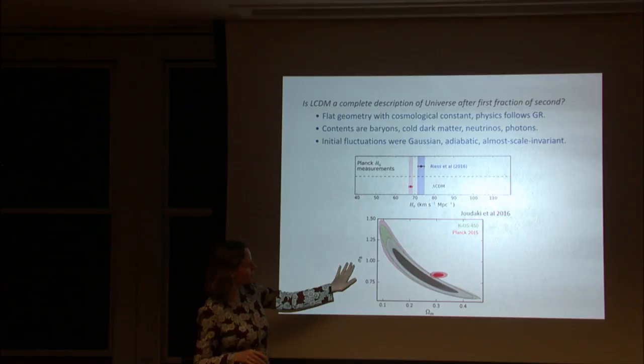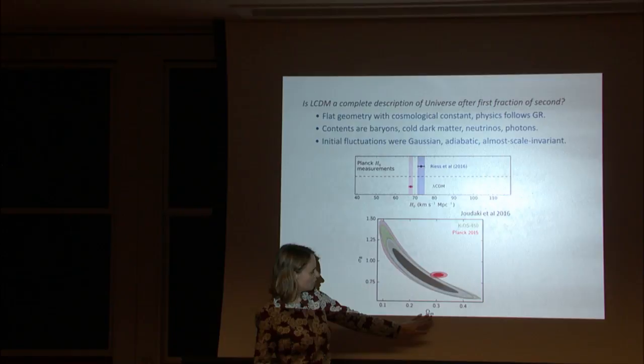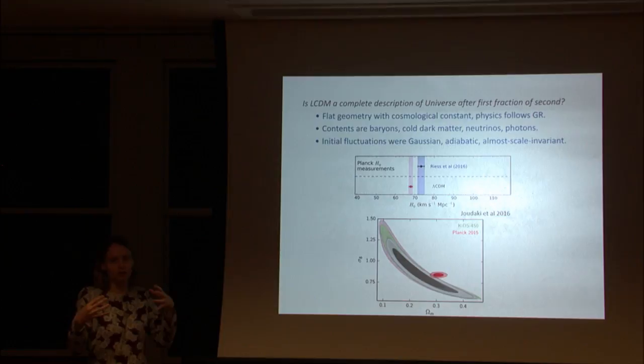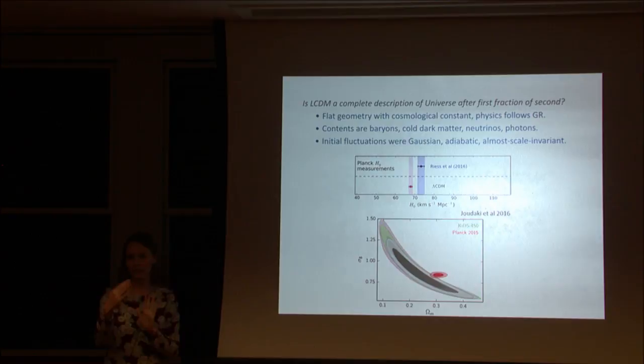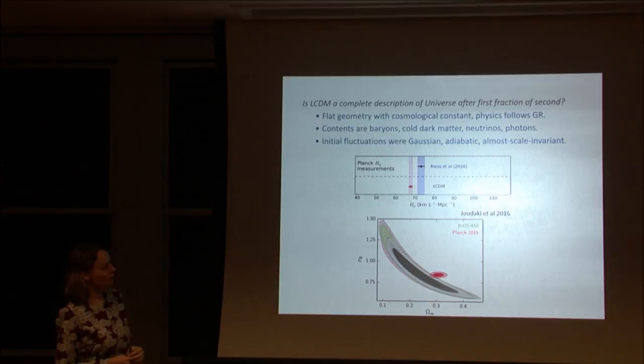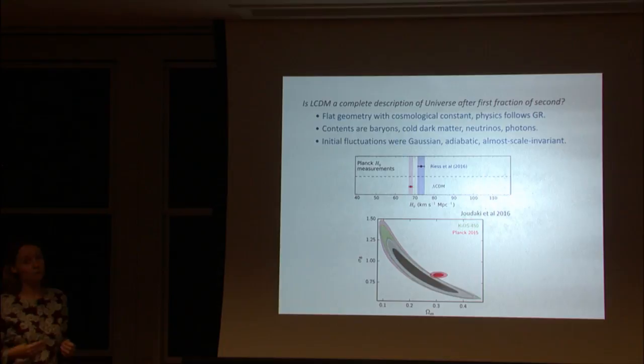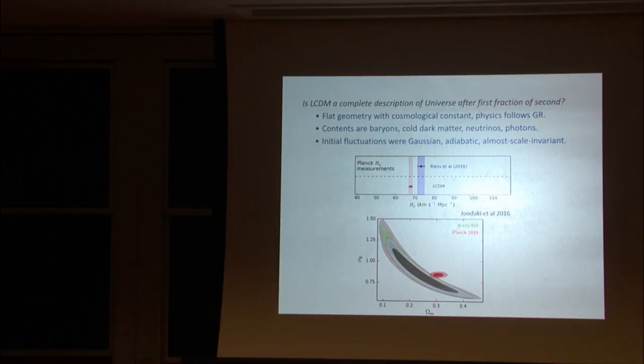Another curious thing is the amplitude of fluctuations today, Sigma-8, on 8 Megaparsec scales, and the matter density fraction. Measurements of large-scale structure from galaxy lensing prefer slightly lower values than you'd predict from Planck CMB measurements extrapolated forward. It's a two-sigma difference, so Lambda CDM is not broken yet, but we should keep exploring.